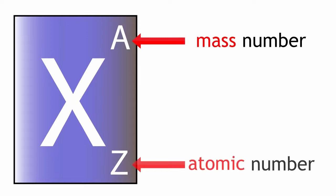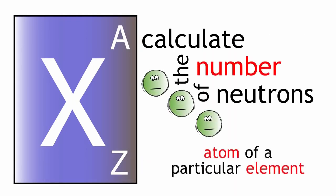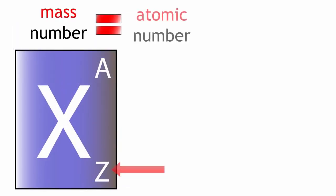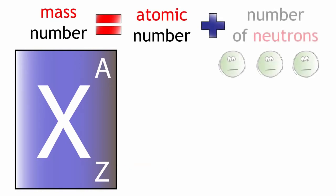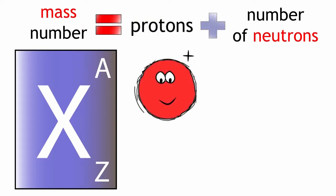So if we know the mass number of an element and we know the atomic number, we can calculate the number of neutrons in an atom of a particular element. The mass number equals the atomic number plus the number of neutrons. The atomic number is just the number of protons in an atom. Therefore, mass number equals protons plus neutrons.